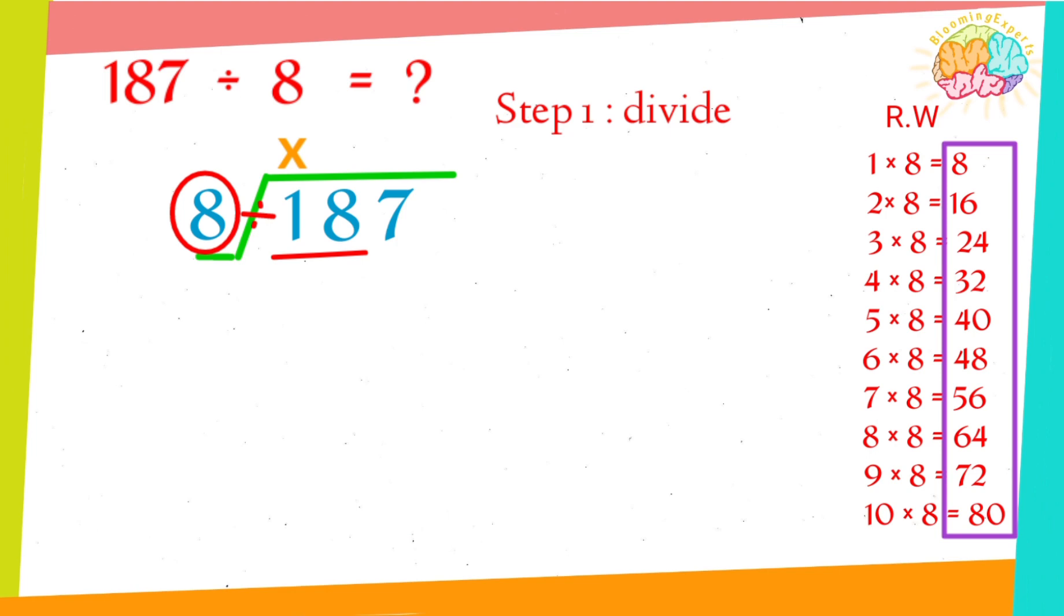The number multiplied by 8 is 2, so 16 divided by 8 is 2. We write the quotient exactly above the dividend.